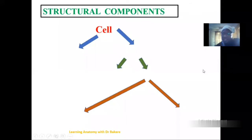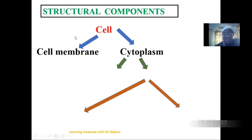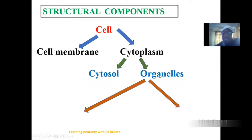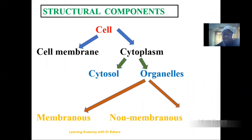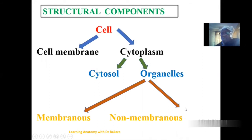Looking at the structural components of the cell: the cell is made up of two basic structures, which include the cell membrane and the cell cytoplasm. The cell cytoplasm is further divided into the cytosol and the cell organelles. The cell organelles are structures embedded within the cytosol, and they are further subdivided into membrane-bound organelles and non-membrane-bound organelles.